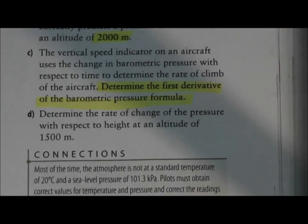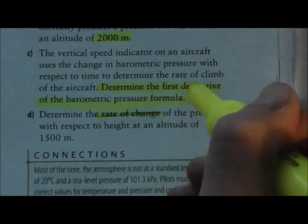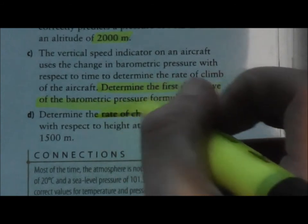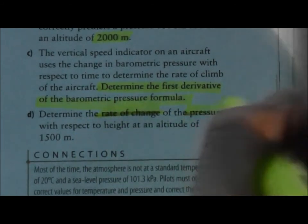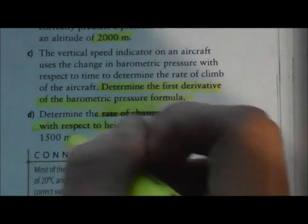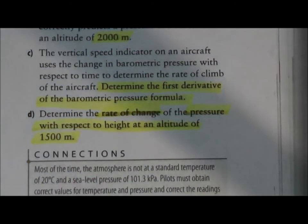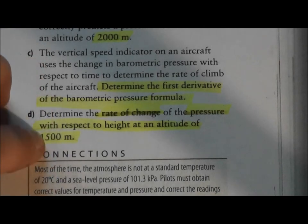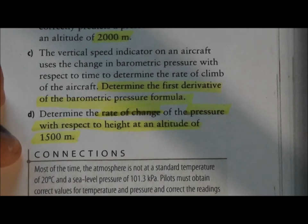Next, in 15D, we're going to be asked to determine the rate of change of pressure with respect to the altitude of 1,500 meters. Now by this point, we'll have all our givens. So, all we'll have to do is simply substitute in 1,500 meters for altitude. And therefore, we can solve the rate of change of pressure with respect to height.